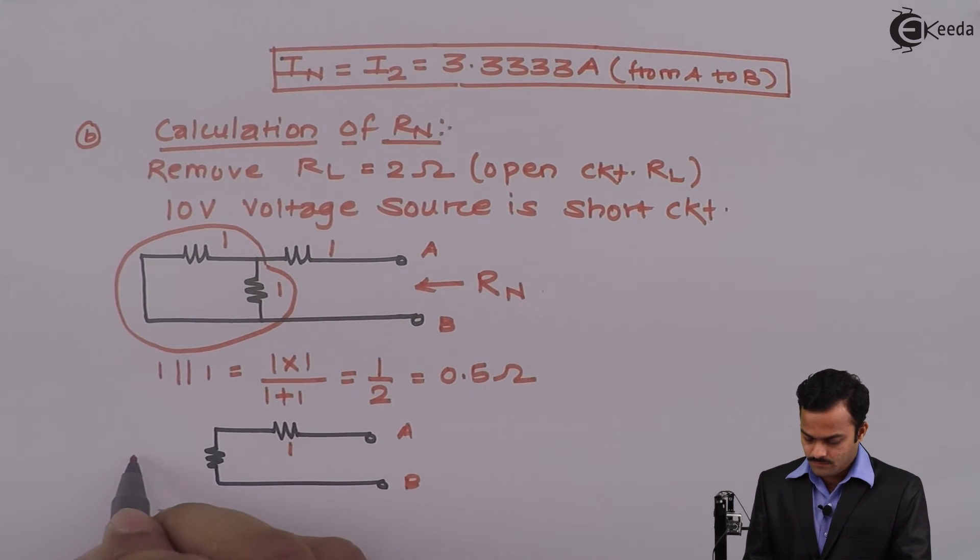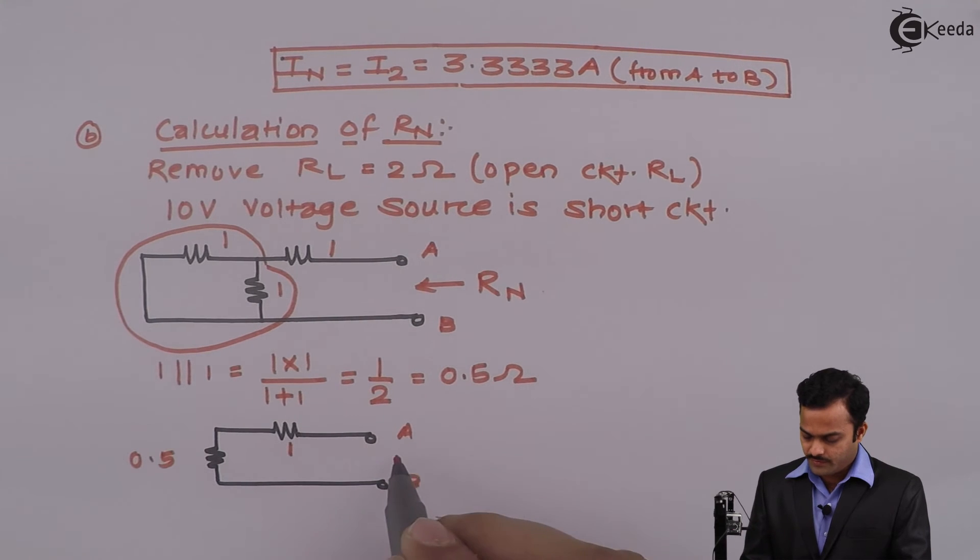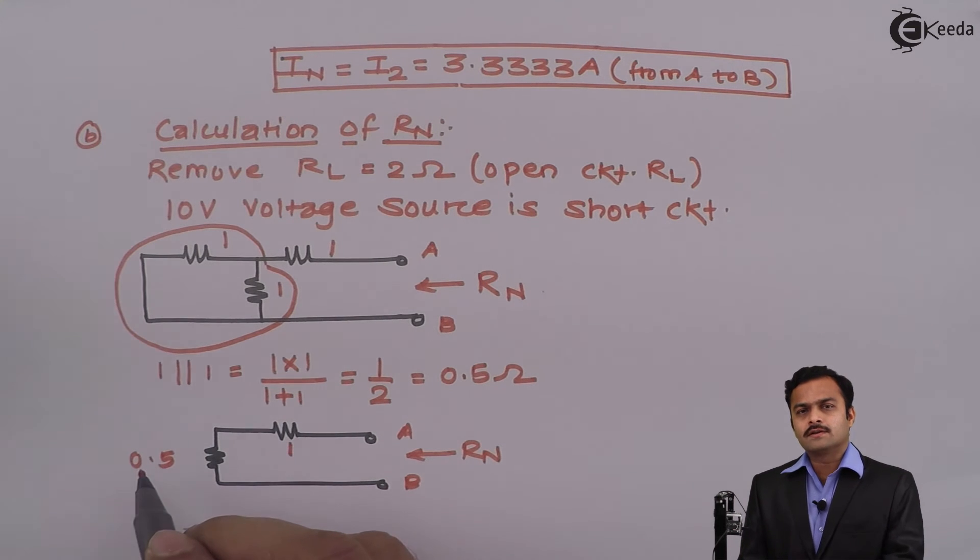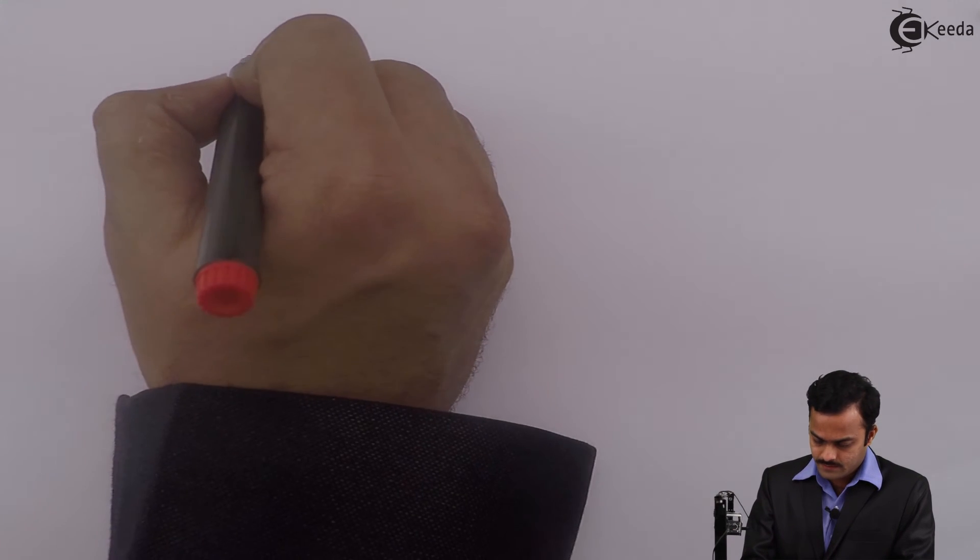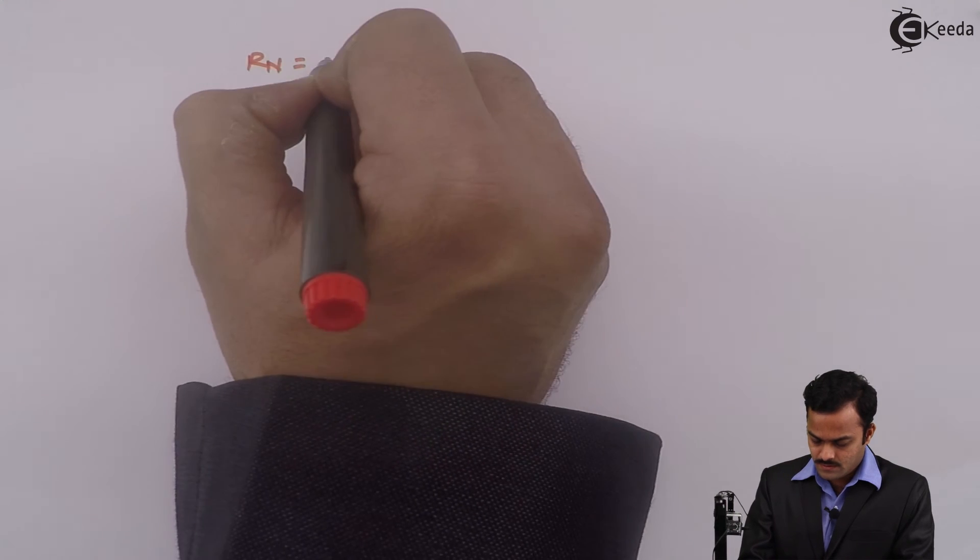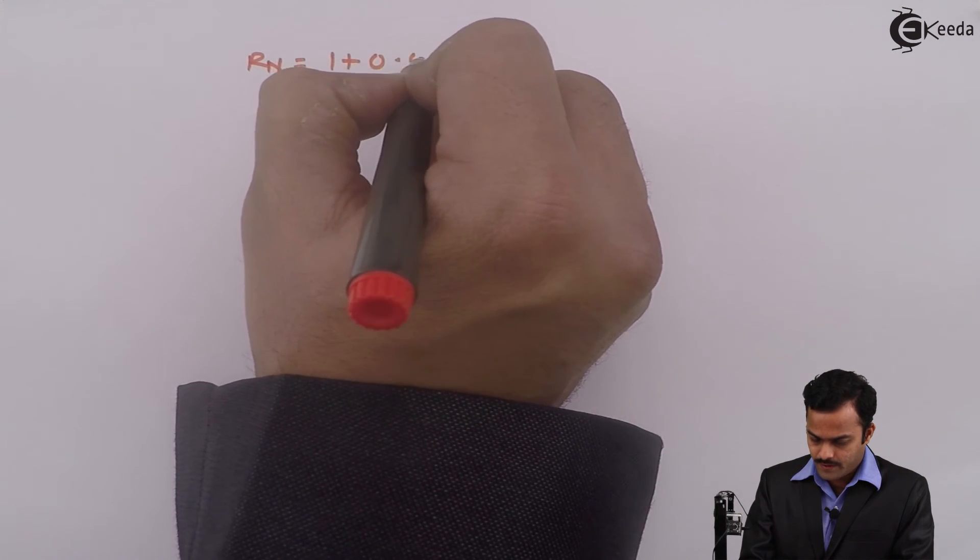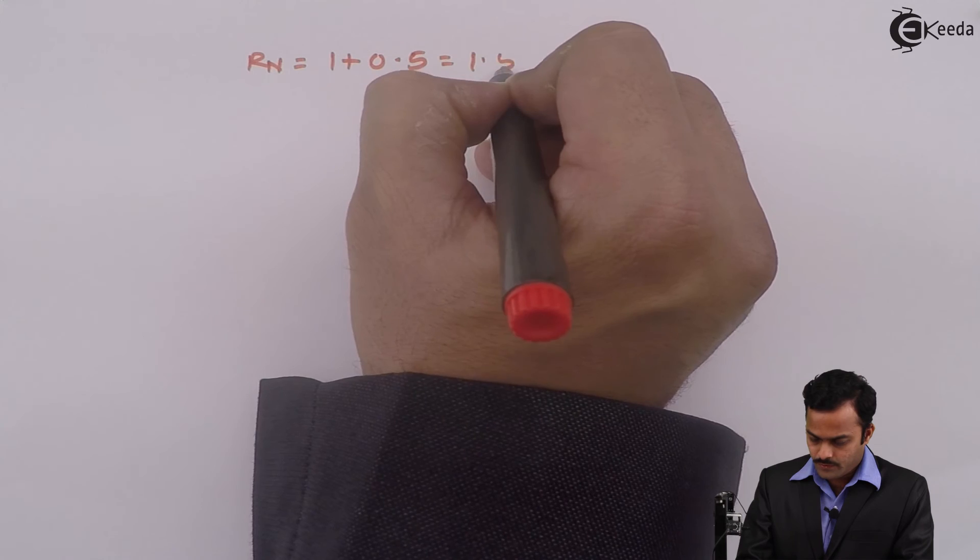So actually I will get a circuit like this. This is 1 ohm, this is equivalent 0.5 ohm, and RN. So here it's very easy, 1 and 0.5 will come in series, so answer I will get is 1.5. So RN is 1 plus 0.5, 1.5 ohm.